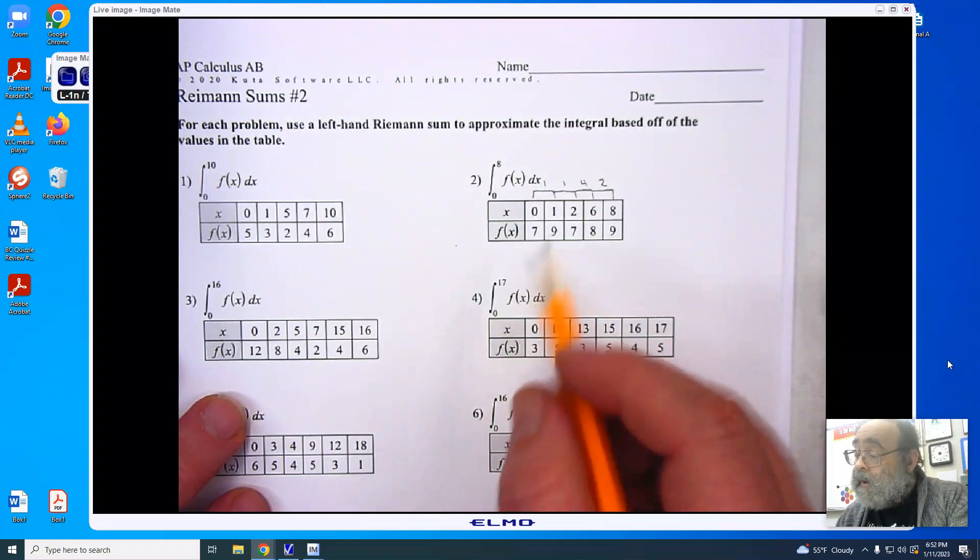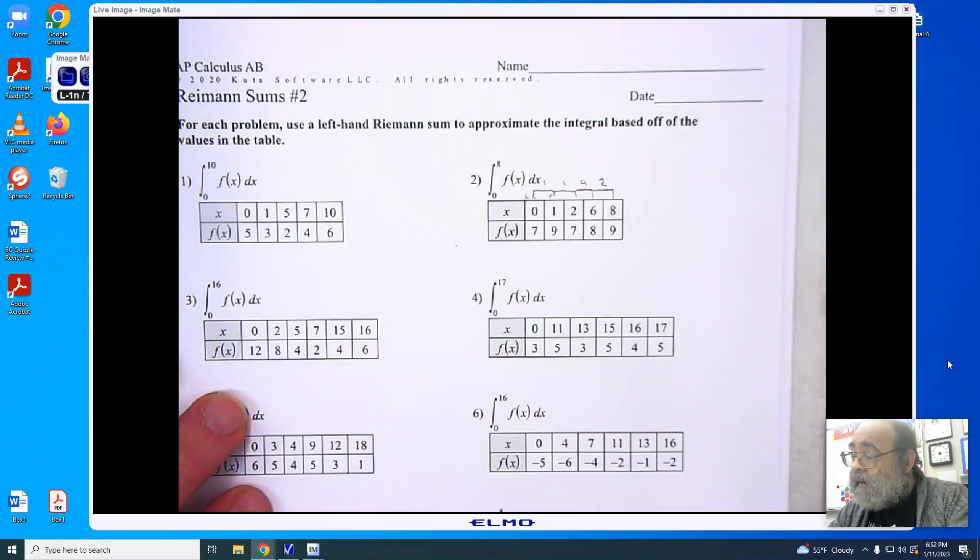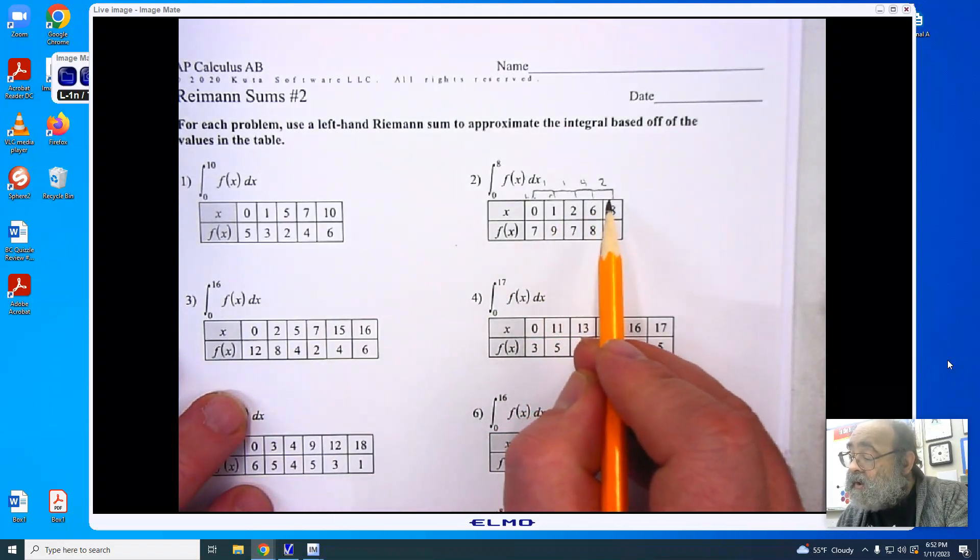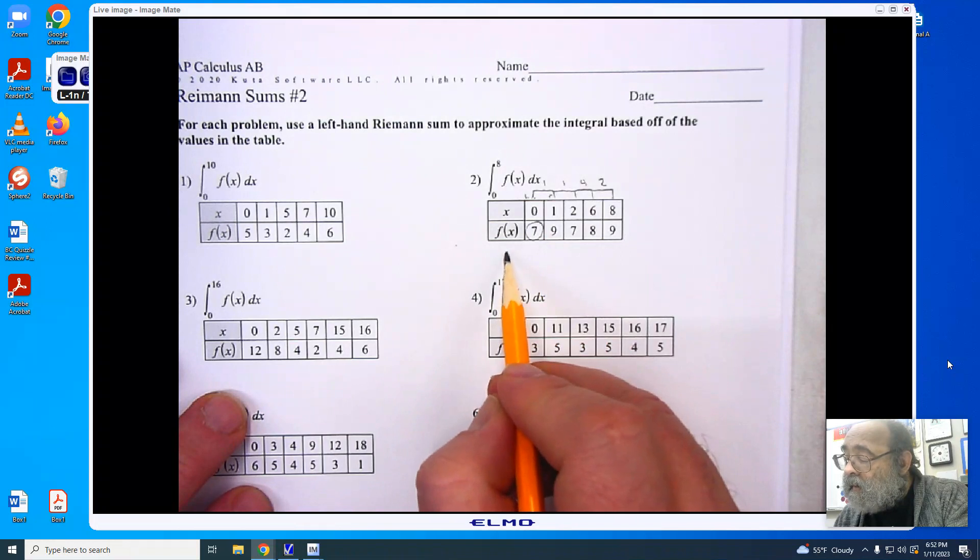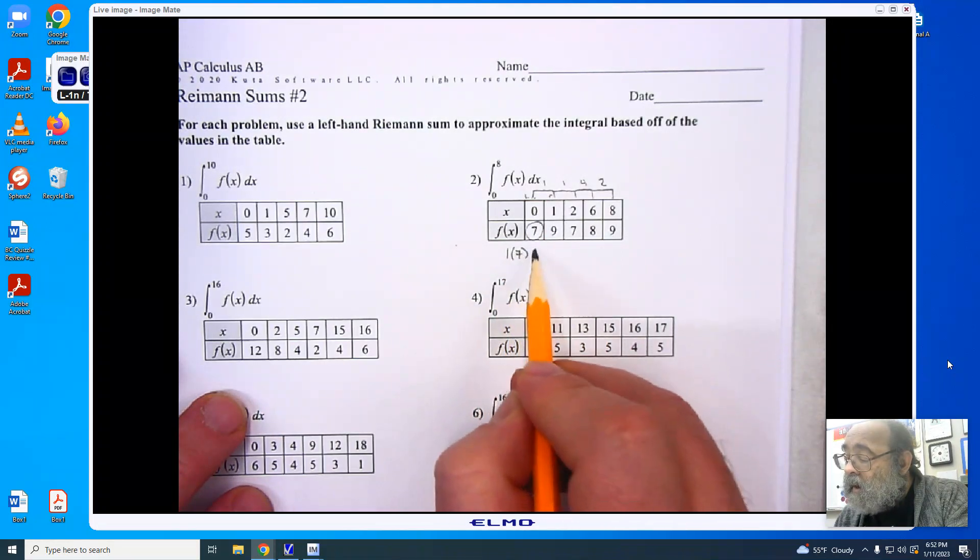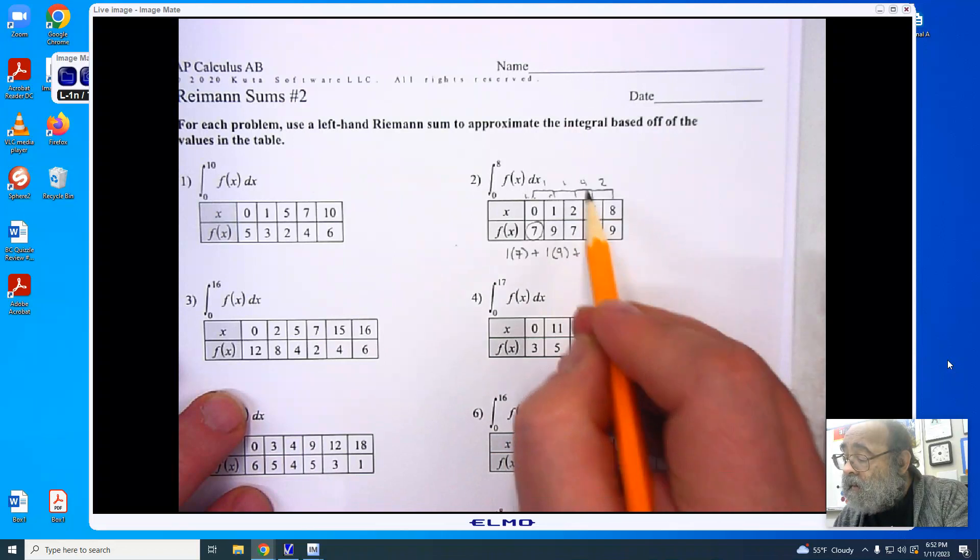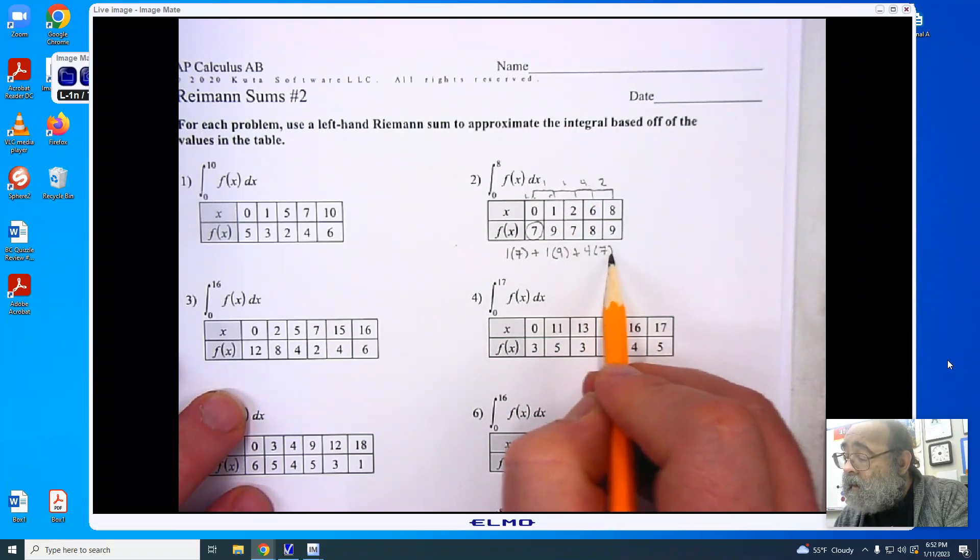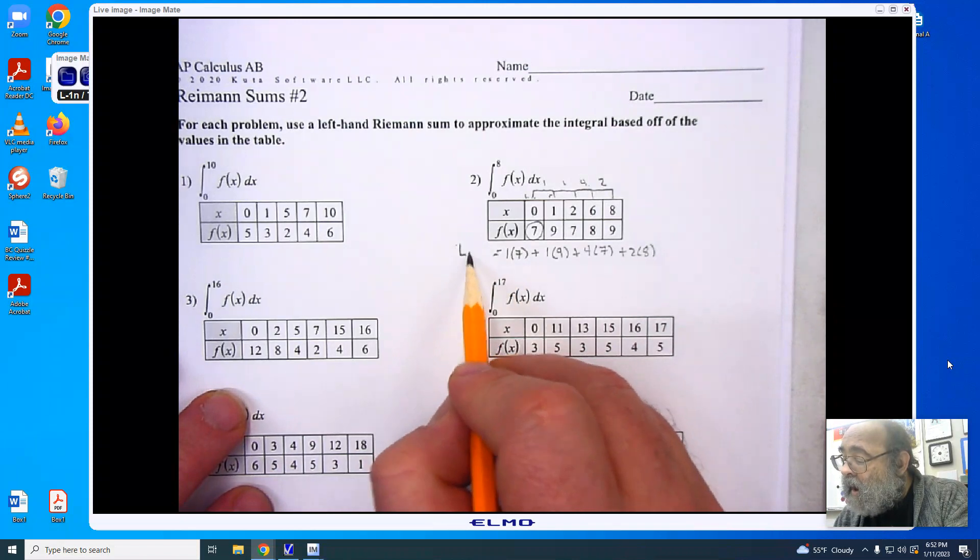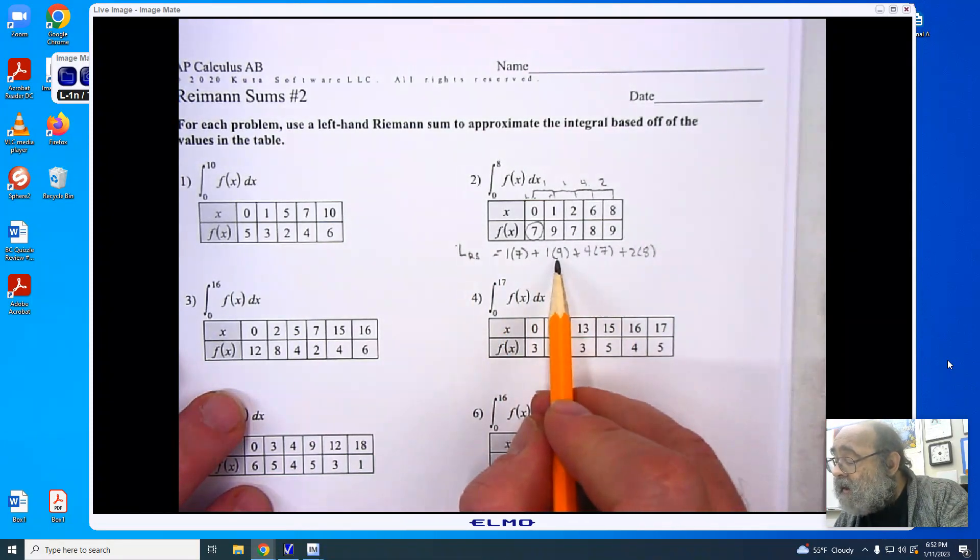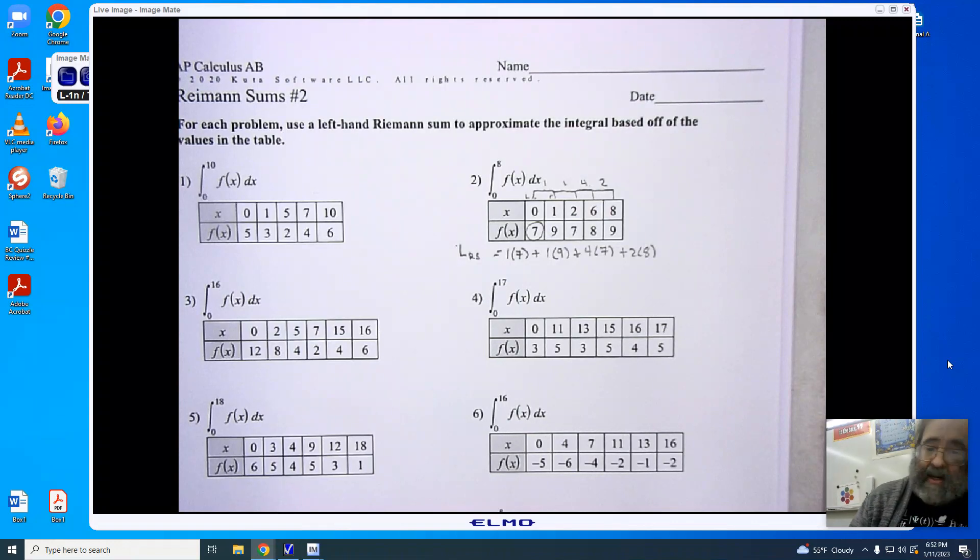Now in order to do a left Riemann Sum, you'll notice that this bar right here has a right side to it and a left side. For each of these two bars, we are going to do the left side for that gap. So our first gap was one, and our left value is seven. This gives us one times seven. We're then going to do one times nine, and then four times seven, and then two times eight. So this is the left Riemann Sum, which I'm going to write as an LRS. And I'm going to add seven plus nine, plus the 28, plus the 16.